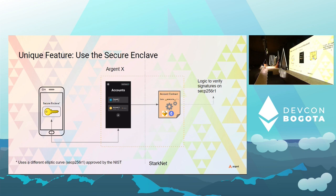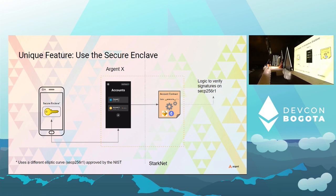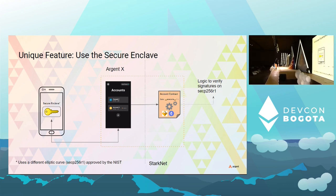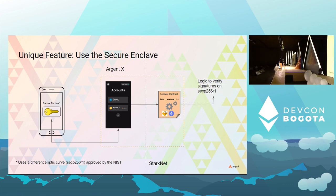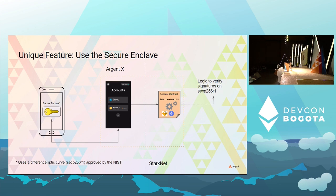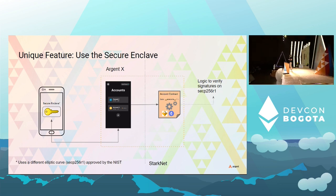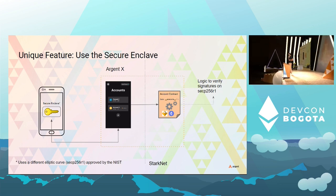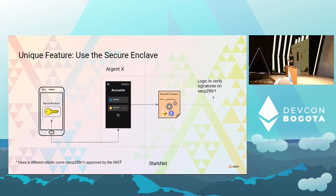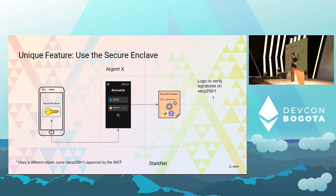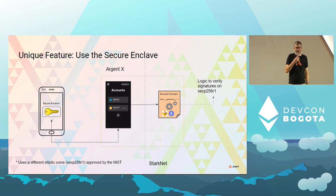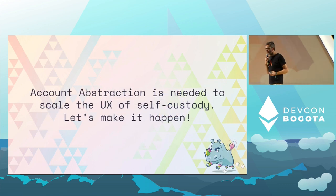One last feature we're exploring is the ability to use your phone's secure enclave. Because your account can be programmed, you can program it to verify signatures on a different elliptic curve — for example, a curve approved by NIST that is implemented in the secure enclave of your phone. Suddenly you're turning every smartphone into a hardware wallet. Someone has already done this on StarkNet, building an account that uses that logic to verify signatures.